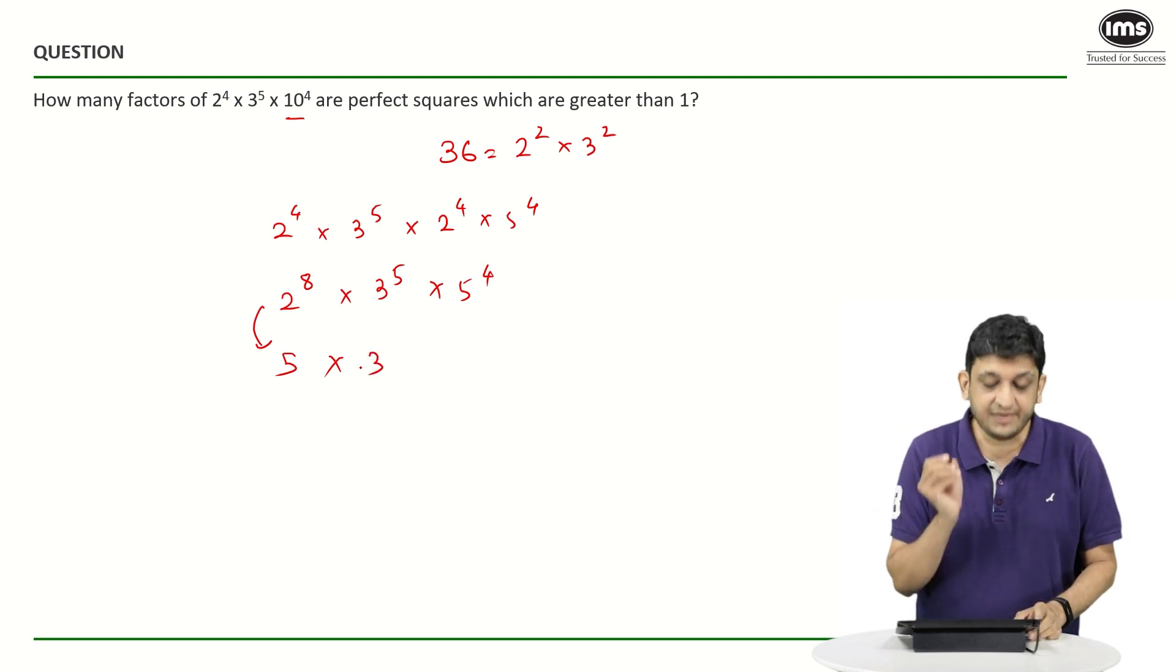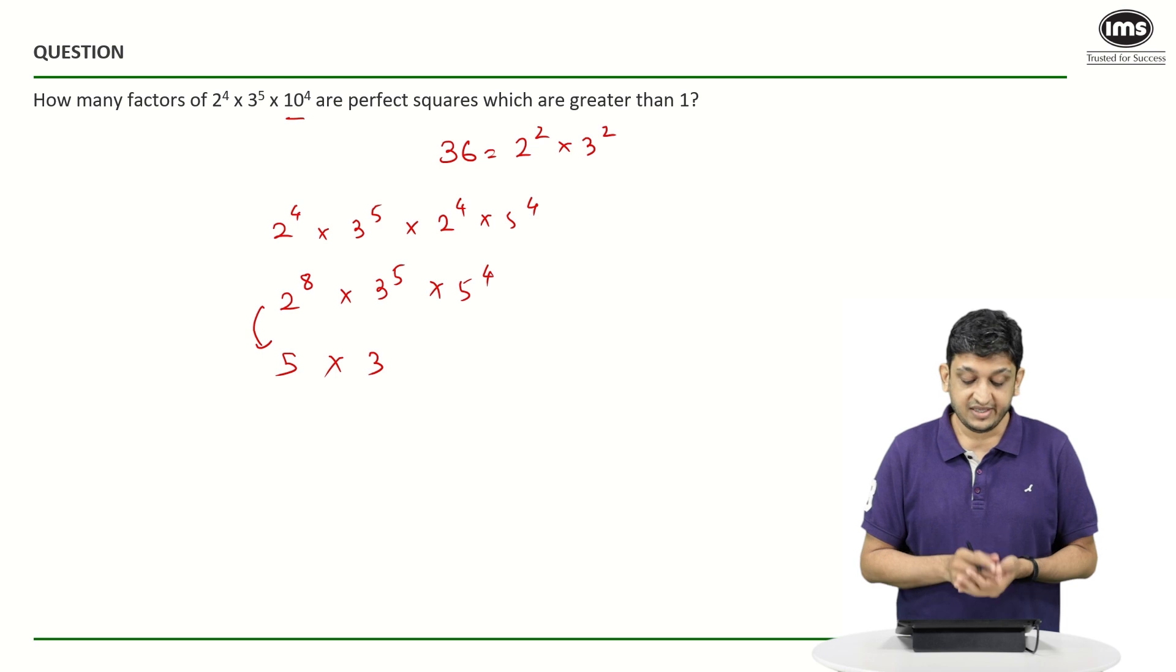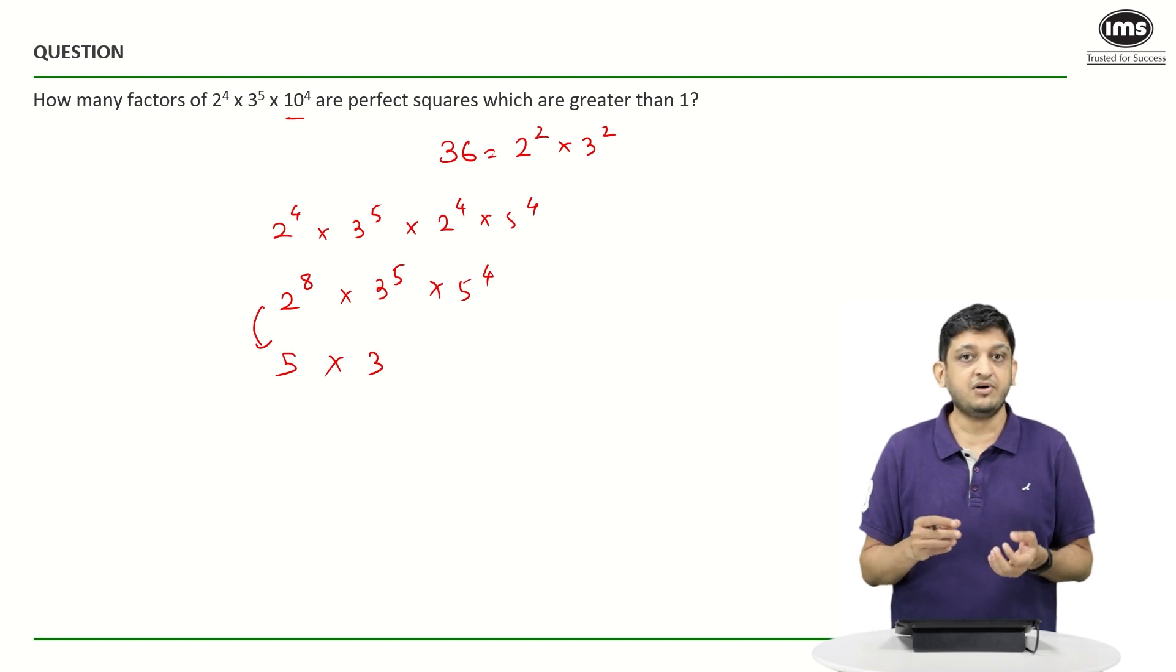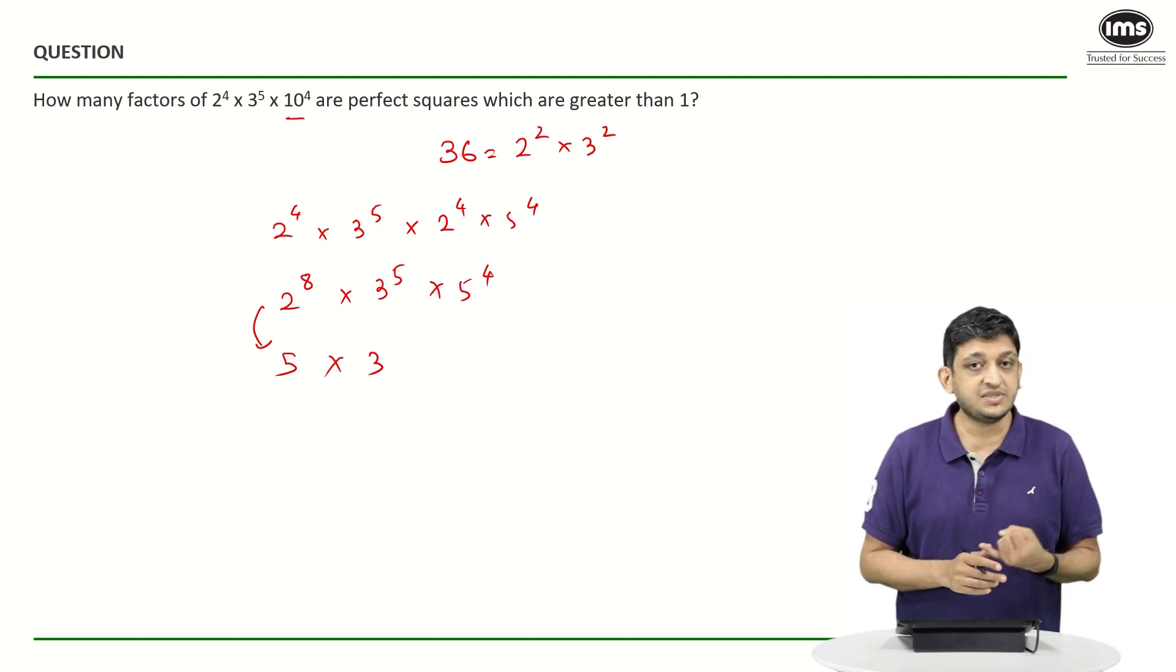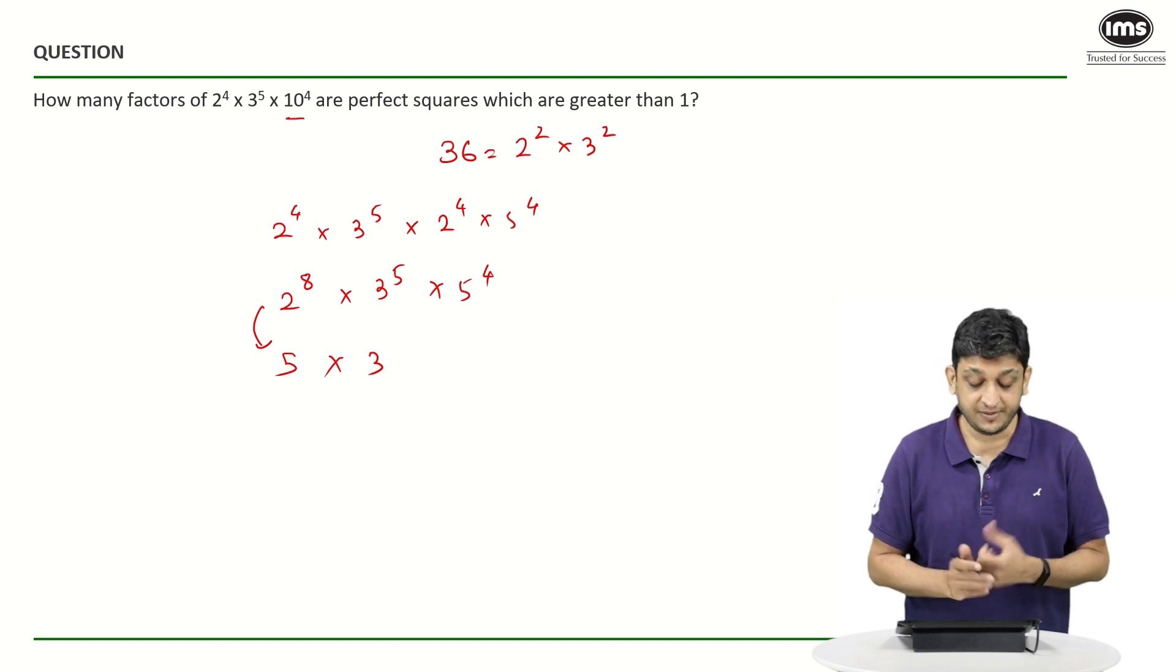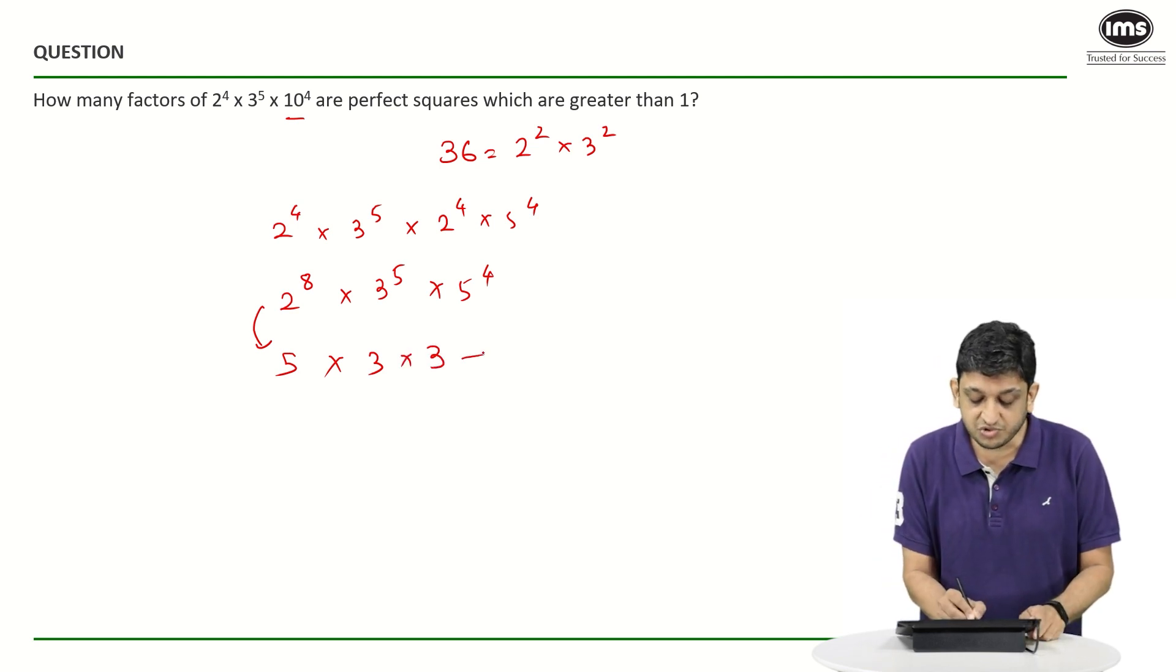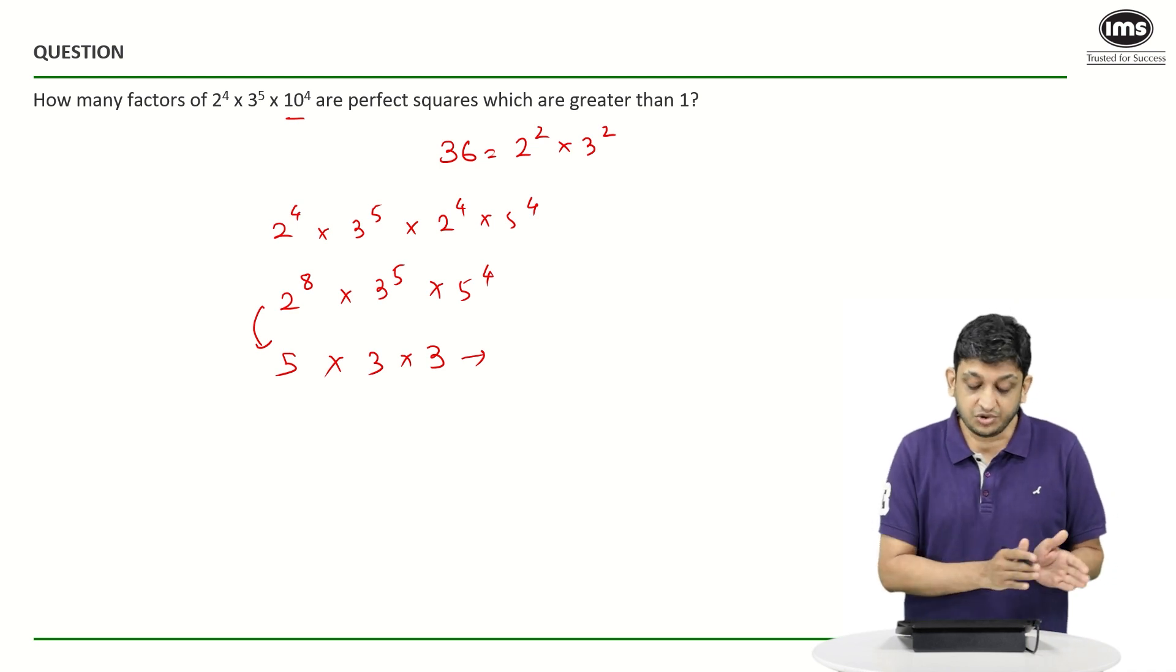So there exist 3 possibilities when we have to choose a power of 3. Similarly, if I want to choose a power of 5, 5⁰ is a possibility, 5² is a possibility, and 5⁴ is a possibility. Again we have 3 ways to choose a power of 5.